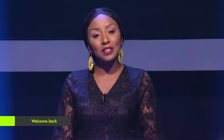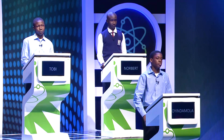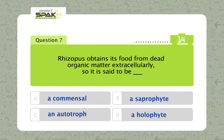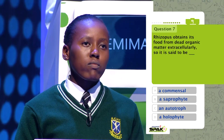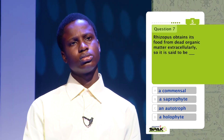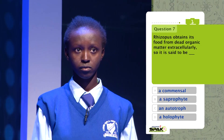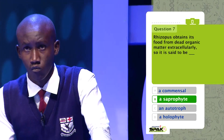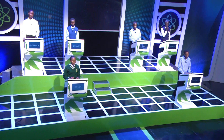I'm having such a good time interacting with the teams, which have one Kenyan and one Nigerian each. This is the Foundation Round — here comes question seven. Rhizopus obtains its food from dead organic matter extracellularly. It is said to be: A, a commensal; B, a saprophyte; C, an autotroph; or D, a holophyte. The correct answer is option B, a saprophyte.